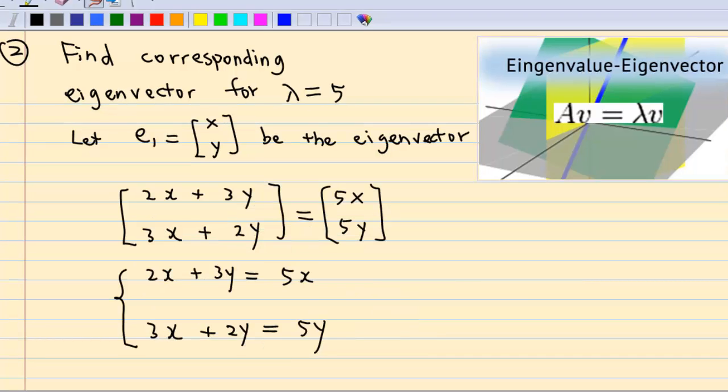Then we have a simultaneous equation, 2x plus 3y equal to 5x, and 3x plus 2y equal to 5y.